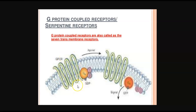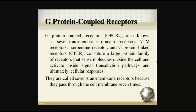You can see one GPCR on the left-hand side looking like a serpent and another one on the right-hand side. It has various analogous terms: G-protein coupled receptor is also referred to as a 7-transmembrane receptor, serpentine receptor, or G-protein linked receptor. It is a large protein family of receptors that sense molecules outside the cell and activate various intracellular signal transduction pathways.